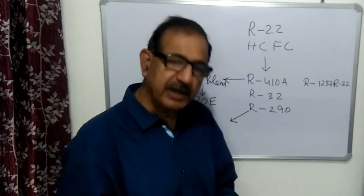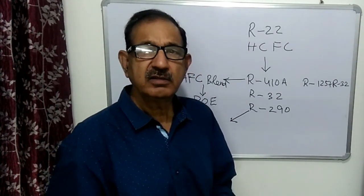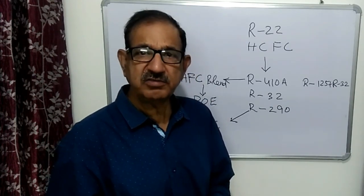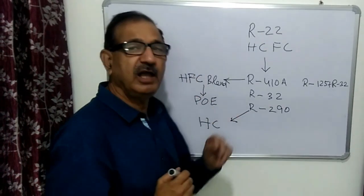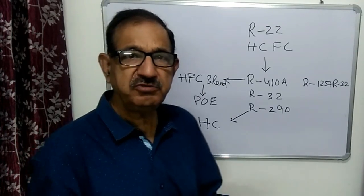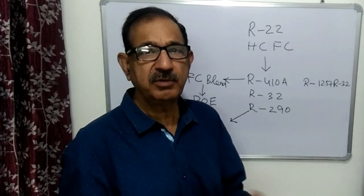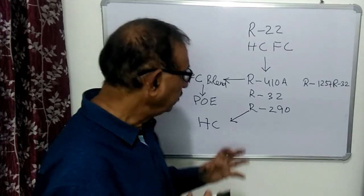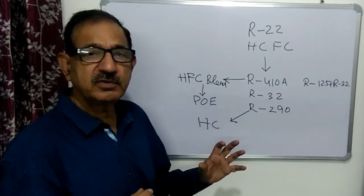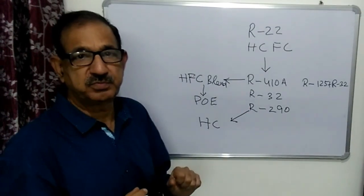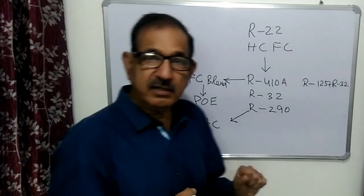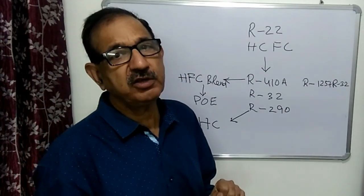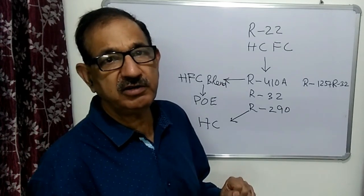The third refrigerant is R290. This is a hydrocarbon — HC — refrigerant. All hydrocarbon gases are flammable, and R290 is highly flammable. The flammability range is between 2% to 10%, so we have to take care of the flammability issue. There is also a restriction on how much of this refrigerant we can charge.